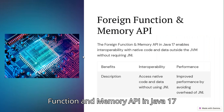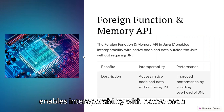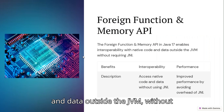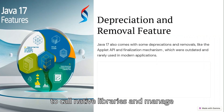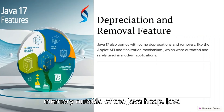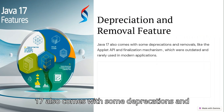The Foreign Function and Memory API in Java 17 enables interoperability with native code and data outside the JVM without requiring JNI. This allows Java programs to call native libraries and manage memory outside of the Java heap.